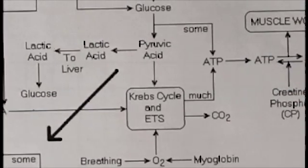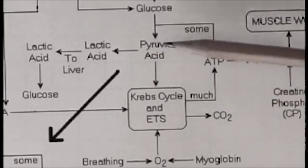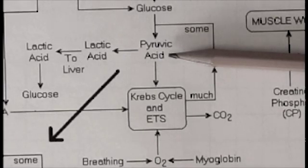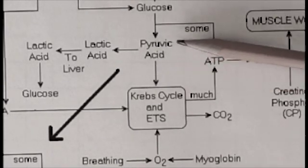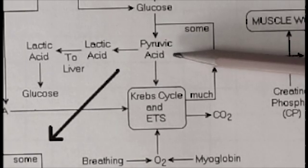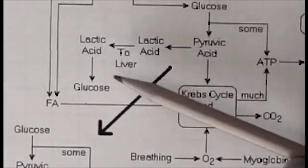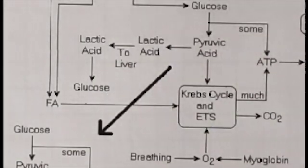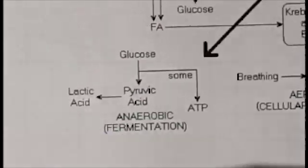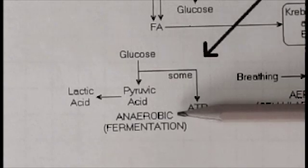Under certain circumstances, muscles need bursts of energy more than can be supplied by the limitation of oxygen, so the muscles carry out an anaerobic process called fermentation. In this case, glucose is broken down into pyruvic acid by glycolysis, and the pyruvic acid is transformed into a waste product called lactic acid. Eventually the lactic acid is transported to the liver and recycled back into glucose. This anaerobic process — glucose to pyruvic acid — generates not a lot of ATP but can generate it quickly.